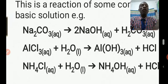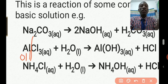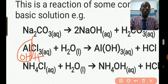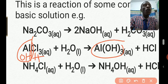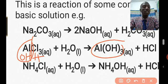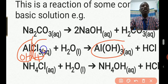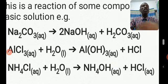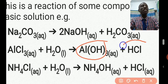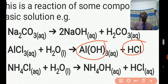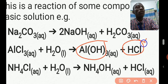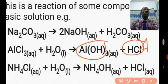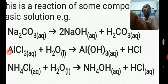Another example: aluminum chloride (AlCl₃). Split the salt — put OH near the metal side and H near the non-metal side. You get aluminum hydroxide Al(OH)₃ and hydrochloric acid HCl. Al(OH)₃ is a weak base while HCl is a strong acid. The stronger component dominates, so the solution will be acidic — turning blue litmus red.